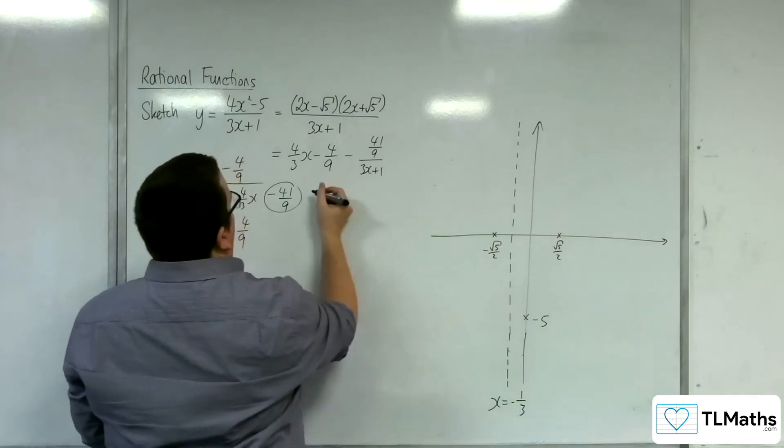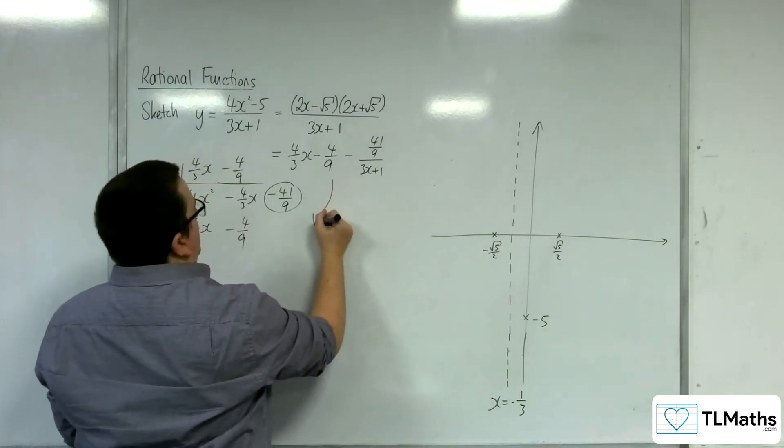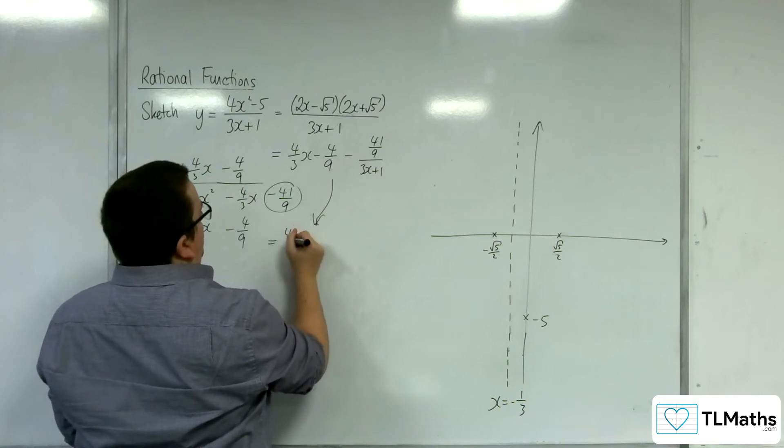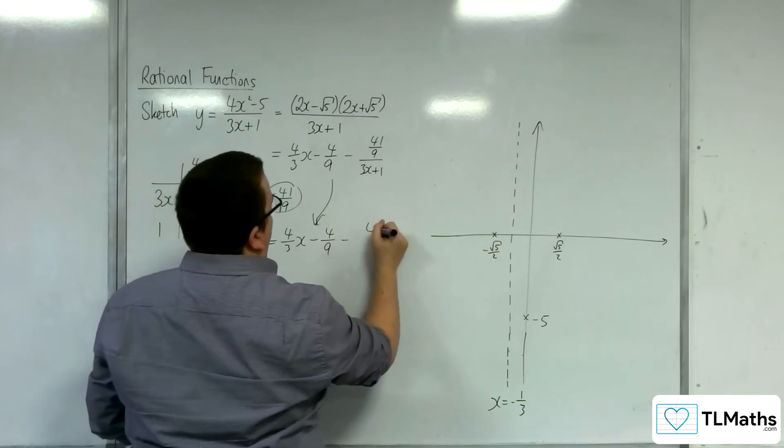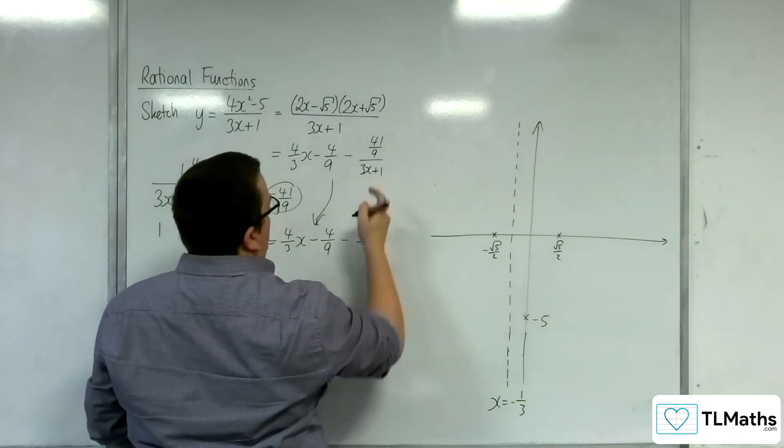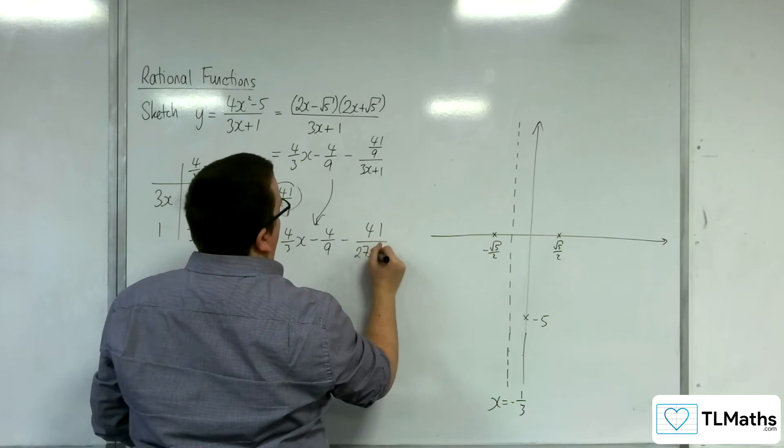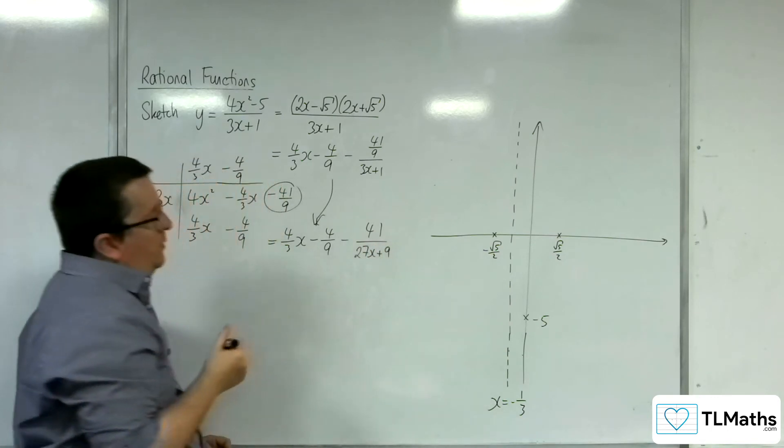Now, you know, if you wanted to simplify it, then we could write it as 4 thirds x, take away 4 ninths, take away 41 over 9 lots of 3x plus 1. So 27x plus 9. You could write it like that if you wanted to.